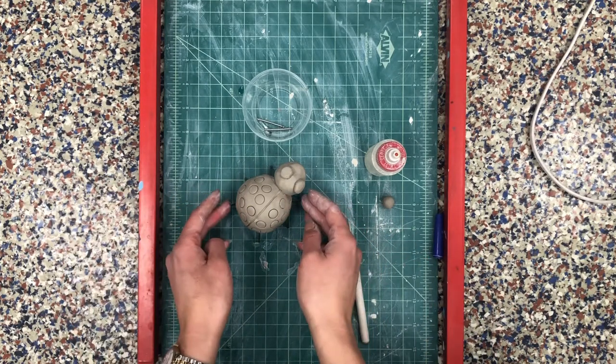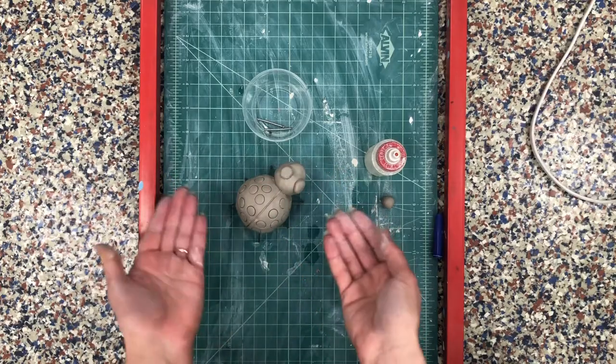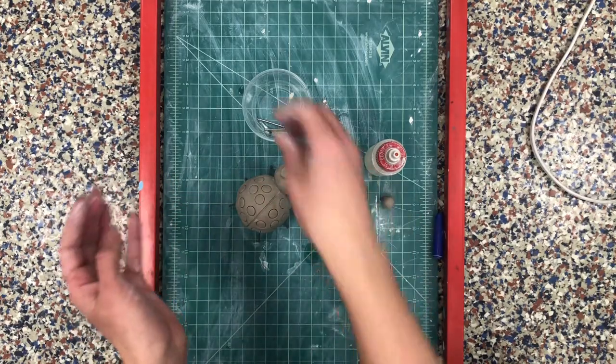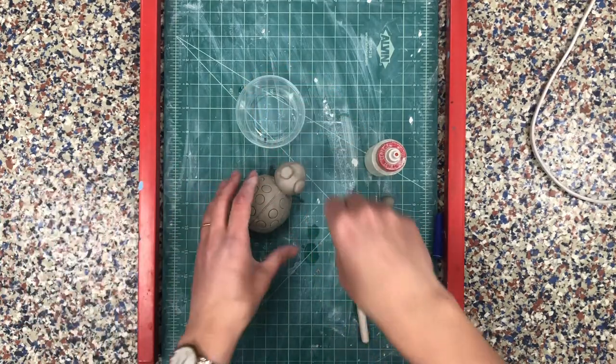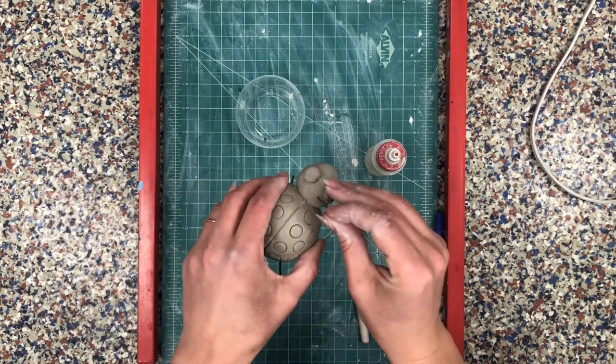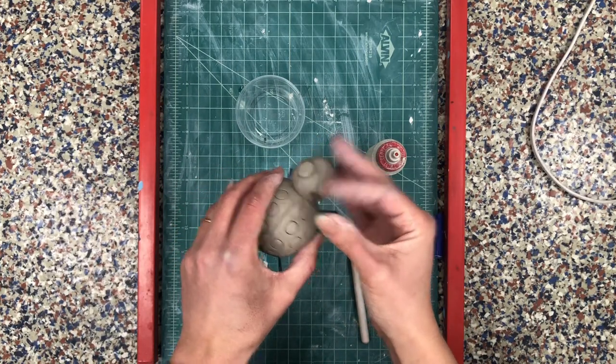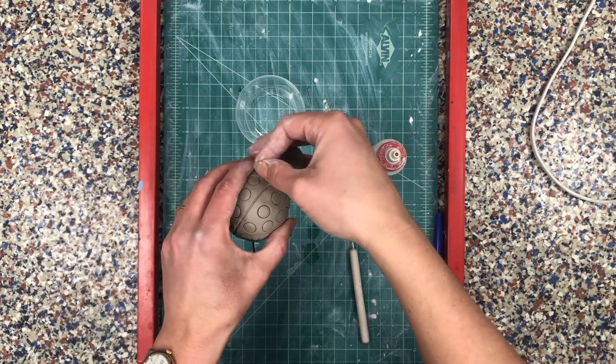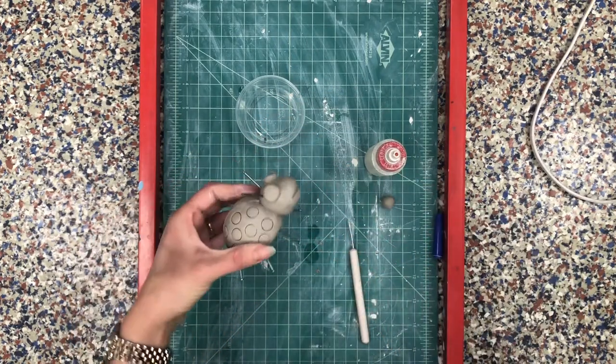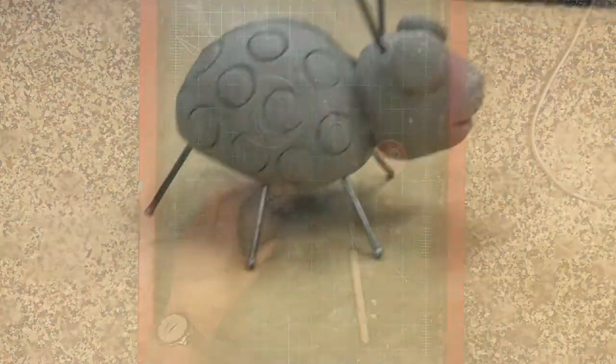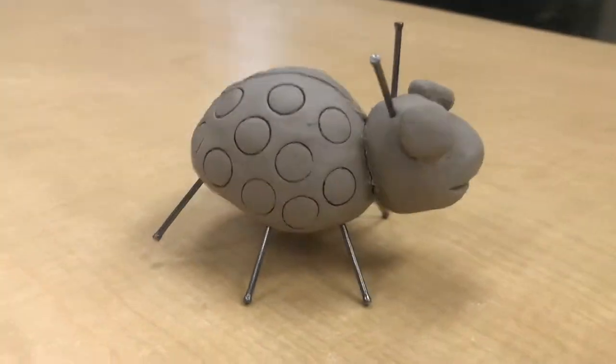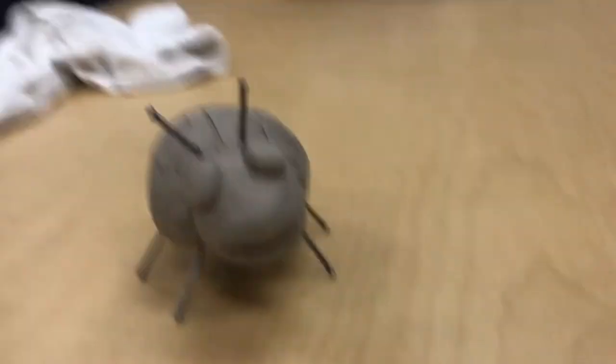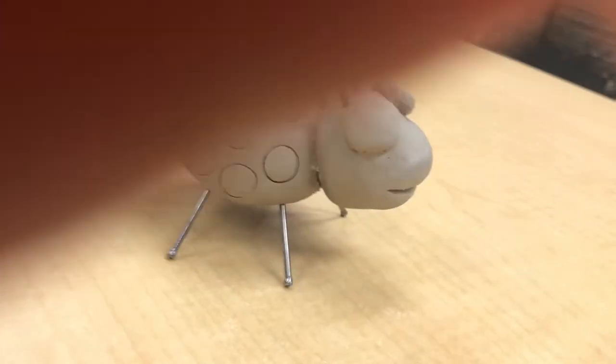It's even okay if not all the legs touch the ground as long as he's not tipping over then it's fine. Once you've got your legs figured out the antenna are much easier. You can just stick these right in the top of his little head just like so. When your bug is balanced and can stand up on his own on the table without tipping over then your clay project is complete.